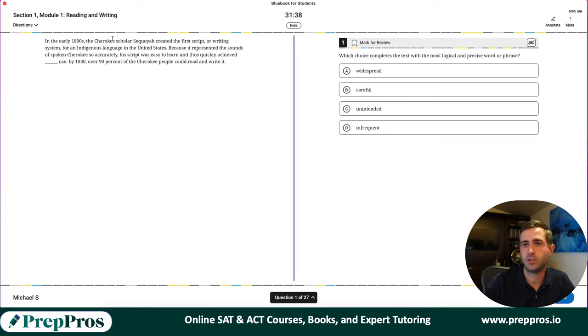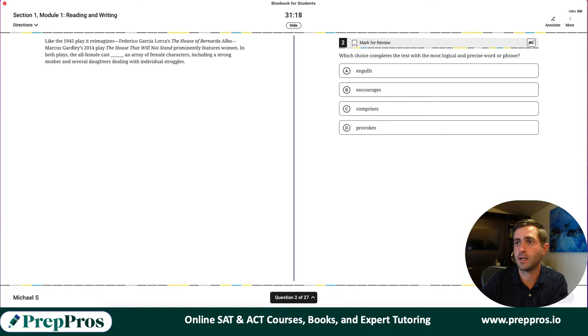So in the early 1800s, the Cherokee scholar Sequoyah created the first script or writing system for an indigenous language in the United States. Because it represented the sounds of spoken Cherokee so accurately, his script was easy to learn and thus quickly achieved blank. By 1830, over 90% of them are using it. So we're saying it's used by a lot of people. Widespread is the only one that's going to make any sense there.